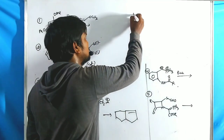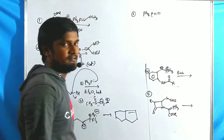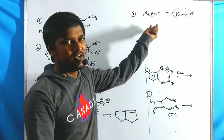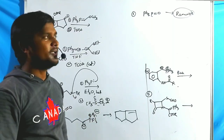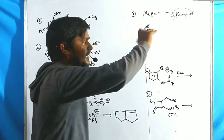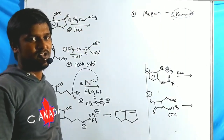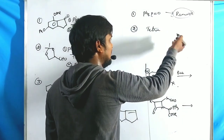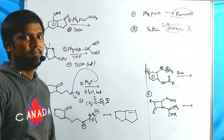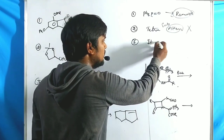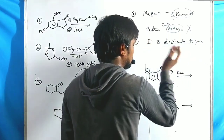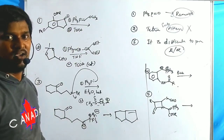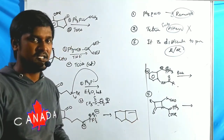Now we discuss the limitations of the Wittig reaction. First, the byproduct Ph₃P=O (phosphine oxide) is very difficult to remove from the reaction mixture — separation is challenging and time-consuming, making the reaction less favorable. Second, preparation of tetra-substituted olefins is not possible; bulkier tetra-substituted alkene preparation is also not possible. Third, it is difficult to predict the stereochemistry of E and Z isomers. These drawbacks were overcome by Horner, Wadsworth, and Emmons, who modified the Wittig reaction to eliminate these issues.